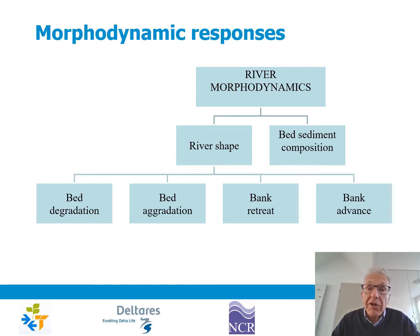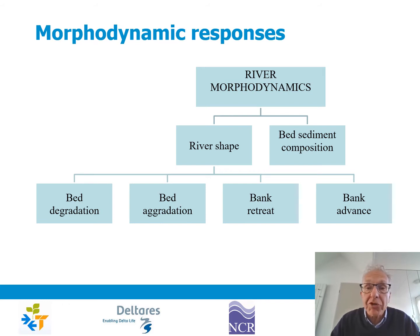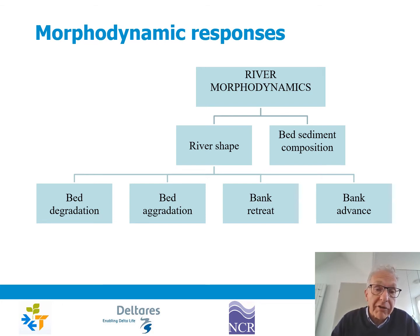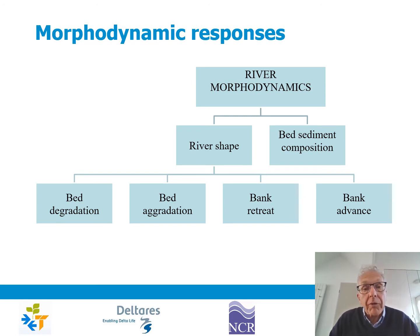Here we see an overview. River morphodynamics regards river shape and bed sediment composition. The river shape is a matter of bed topography. The bed can go down, which is bed degradation by erosion, or the bed can go up, which is aggradation by sedimentation.